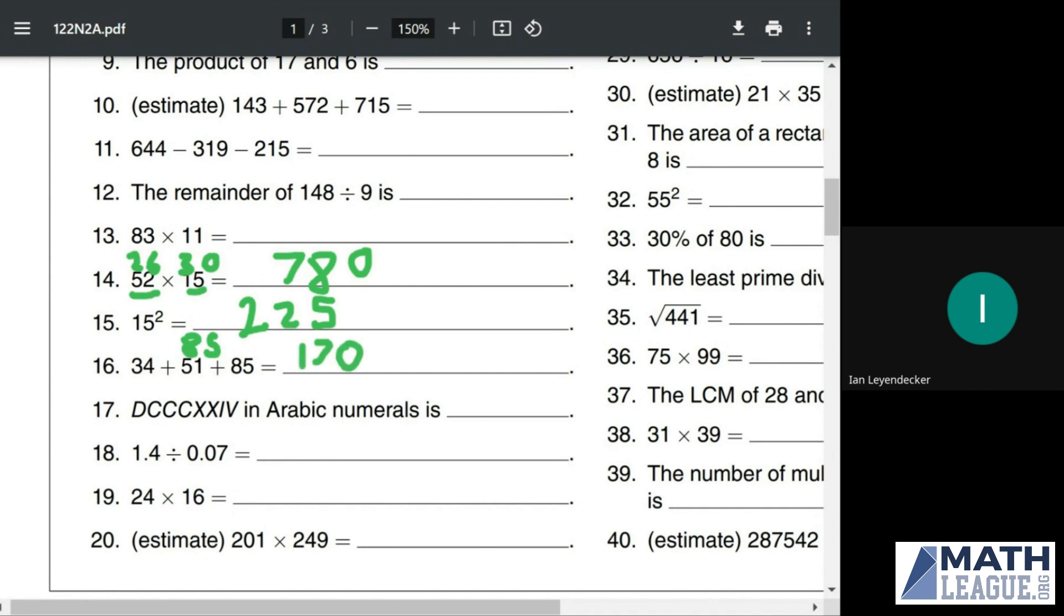1.4 divided by 0.07. First of all, let's go ahead and move these decimals. As long as we move the decimals the same amount of spaces in the same direction on both sides of this expression, the expression remains the same. So we can move it one jump to the side to turn it into 14 divided by 0.7, and then two jumps to the side to turn it into 140 divided by 7, which is 20.